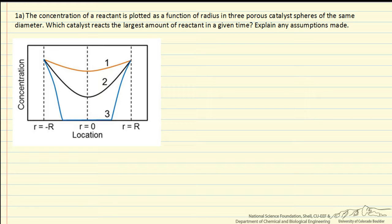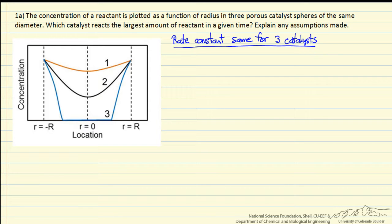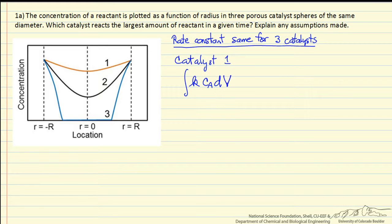One assumption is that the rate constant is the same. If we make this assumption, then it's easy to determine that catalyst 1 reacts with the most, because the amount that reacts is going to be the rate constant times the concentration inside the catalyst. Since the concentration is changing, we integrate over the volume of the catalyst. Each catalyst has the same volume, so if the rate constant is the same, the one with the highest concentration is going to have the highest rate — and so that's catalyst 1.